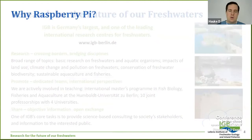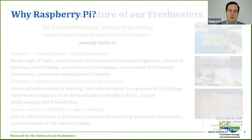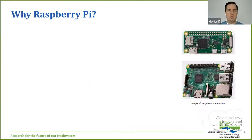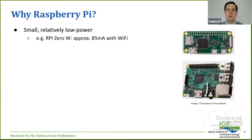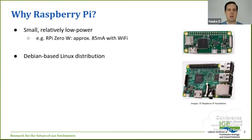I'd like to thank my employer for giving me the time to talk to you. So, why do I use Raspberry Pi so much? I like them a lot because they're small and very good for building data loggers. They use relatively low power — for example, the Raspberry Pi Zero W takes about 85 milliamps, which makes it good for battery-powered applications. They also run a full Debian-based Linux distribution, so all the packages you know from a regular Debian system are available.